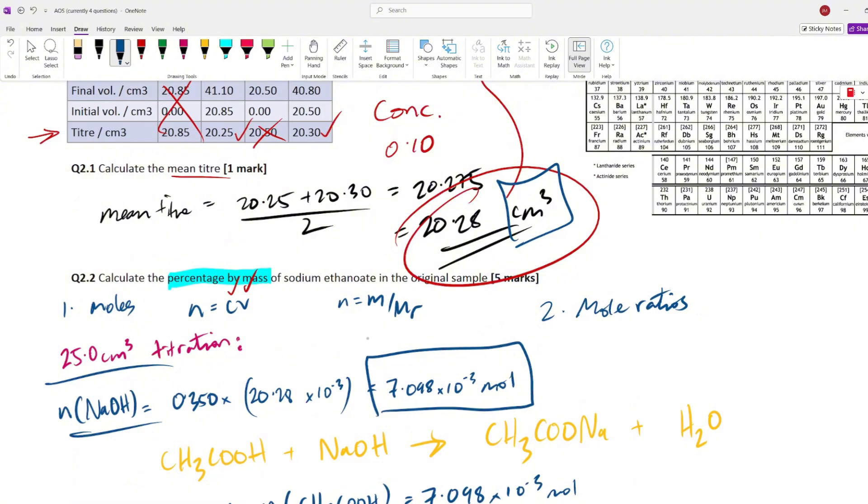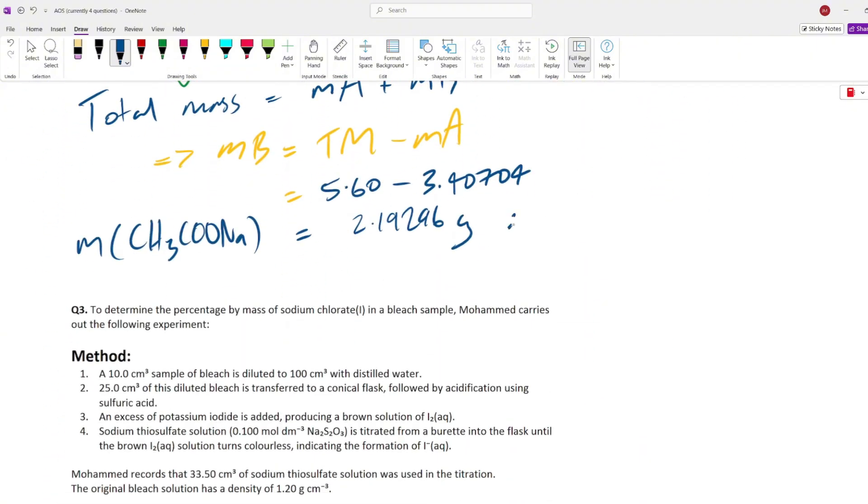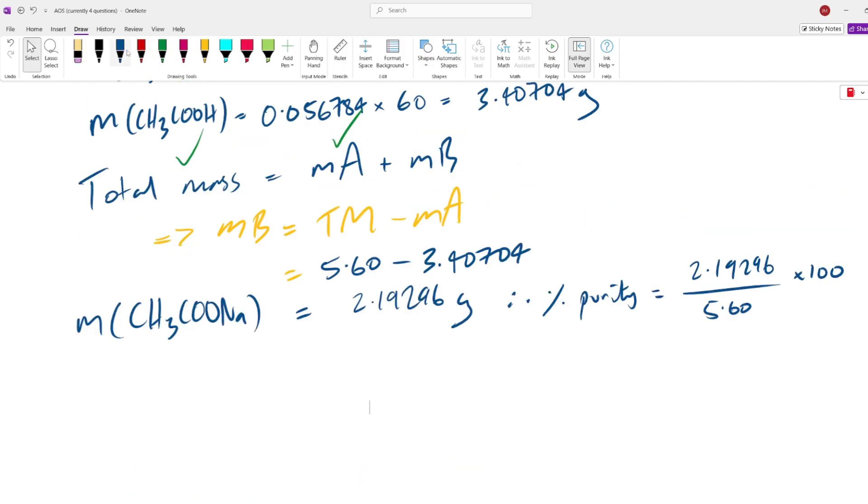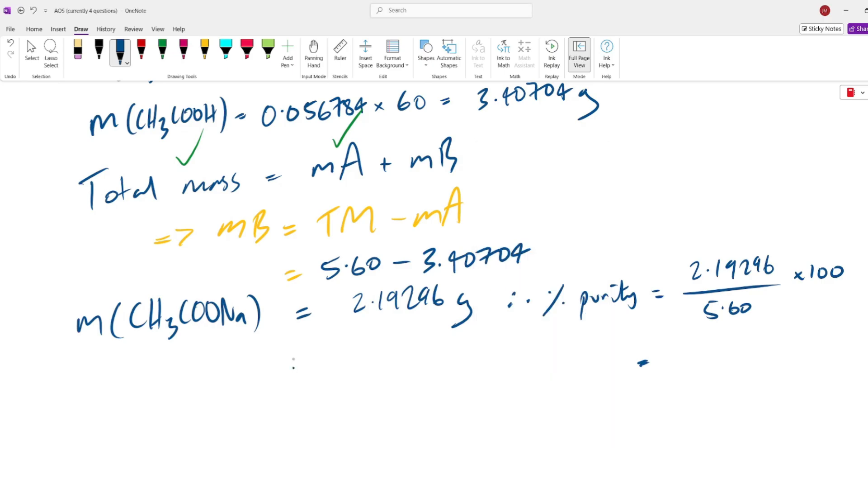Now, all we have to do to work out our percentage is do the percentage that we're looking for as the numerator divided by the total mass as the denominator multiplied by 100. You multiply it by 100 because it's a percentage. So, therefore, percentage purity equals the mass of the sodium ethanoate, 0.7328, divided by the total mass, 5.6 times 100. All right, let's move that down out the way because that's a different question. And that equals, if we put that in our calculator, what we've got going on, 0.7328 over 5.6 multiplied by 100. That gives us an answer of 13.08%.